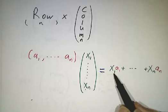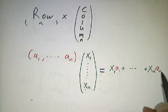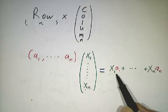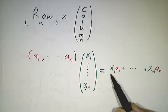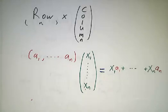It may seem a little bit funny that I'm writing the x's first and the a's second, but of course, that's the same thing as a1x1 plus anxn. We'll see why this is the right way to write it for more general cases.